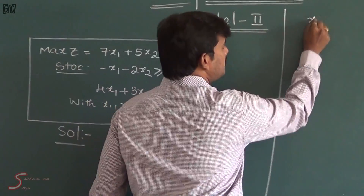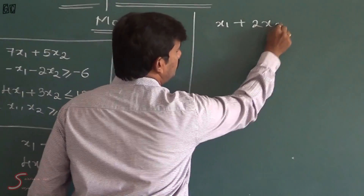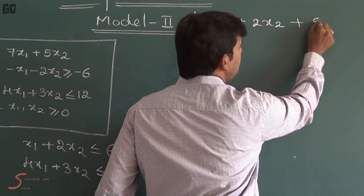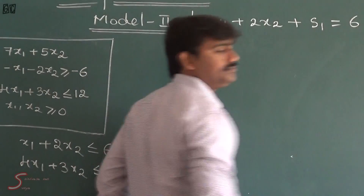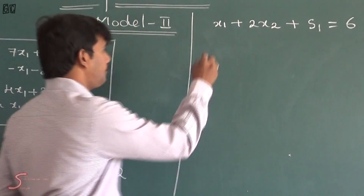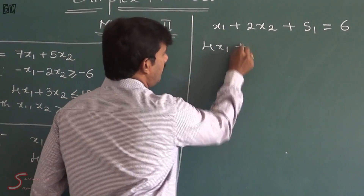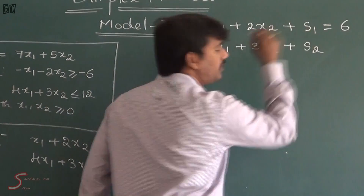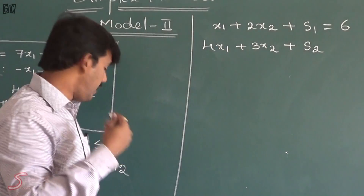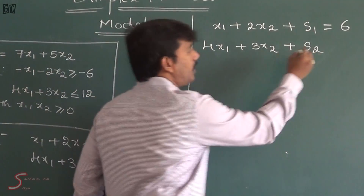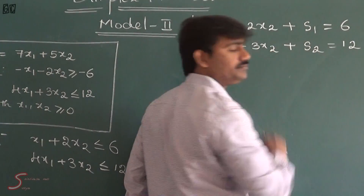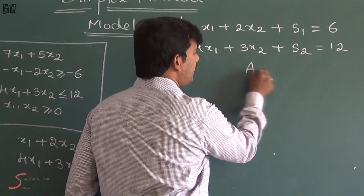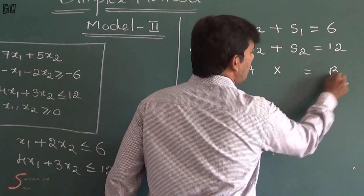That is, x1 plus 2x2 — since this is in the form of less than or equal to — we introduce slack variable s1, giving x1 plus 2x2 plus s1 equal to 6. And for the second constraint, 4x1 plus 3x2 — we have one more less than or equal to type — so we introduce slack variable s2, giving 4x1 plus 3x2 plus s2 equal to 12. After this, we set up the constraint matrix form: Ax equal to b.